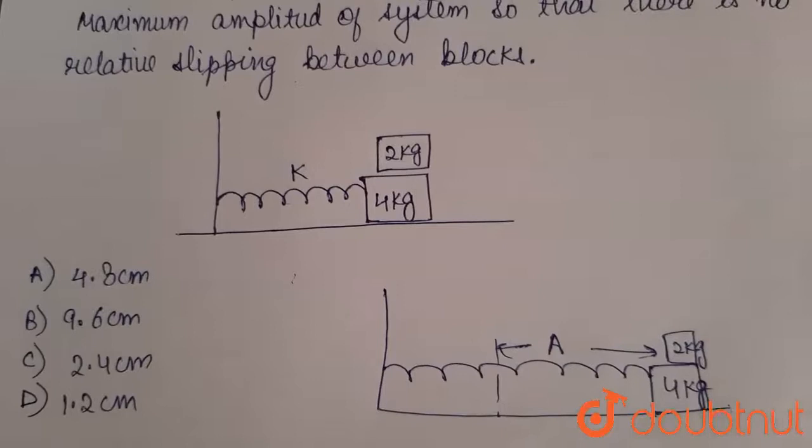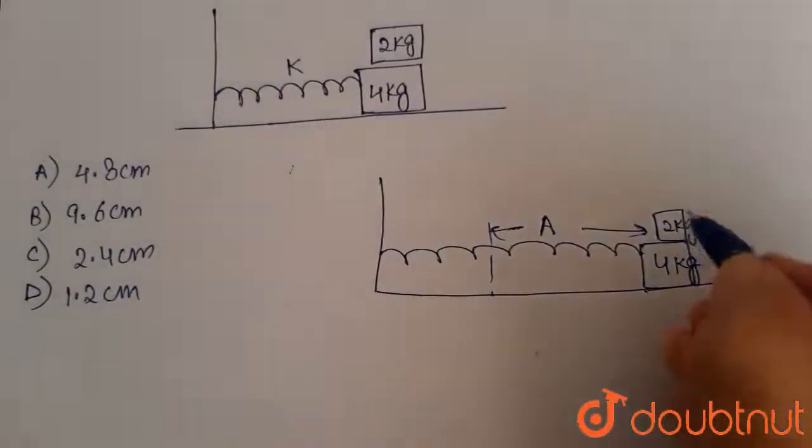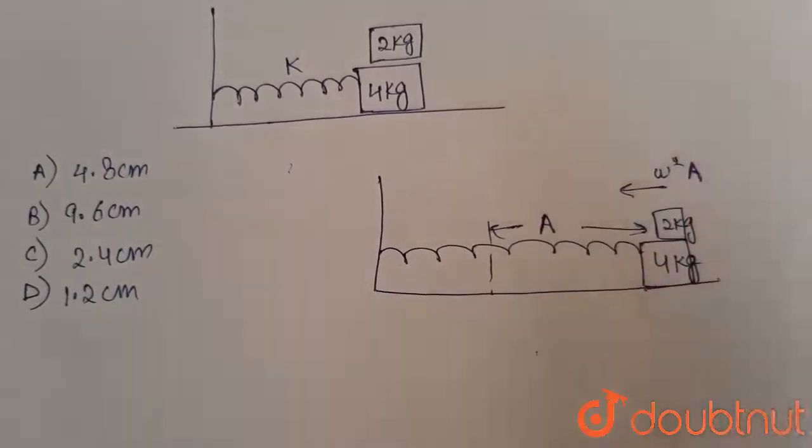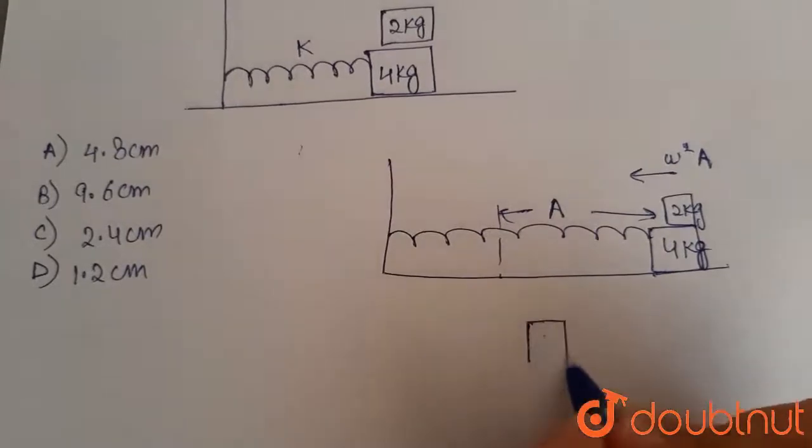since there is no slipping, that means both the objects will have the same common acceleration, which will be omega square into A, towards the mean position. So in order to draw the FBD of 2 kg,